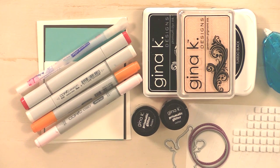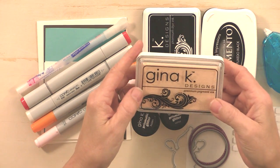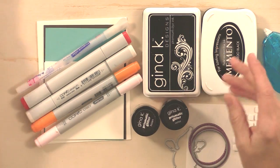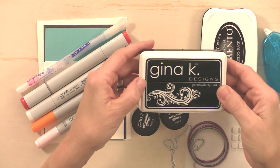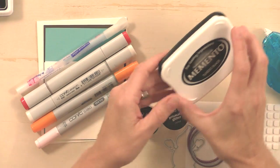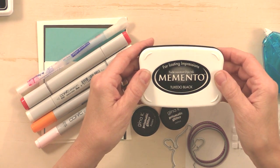First you're going to need some ink. The ink that I'm using is the Gina K Designs Premium Pigment Ink in Ivory. I'm also going to use some of our Black Onyx Dye Ink and some of the Memento Tuxedo Black Ink.